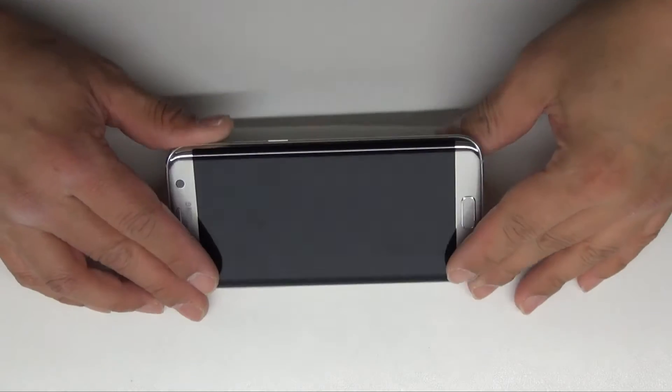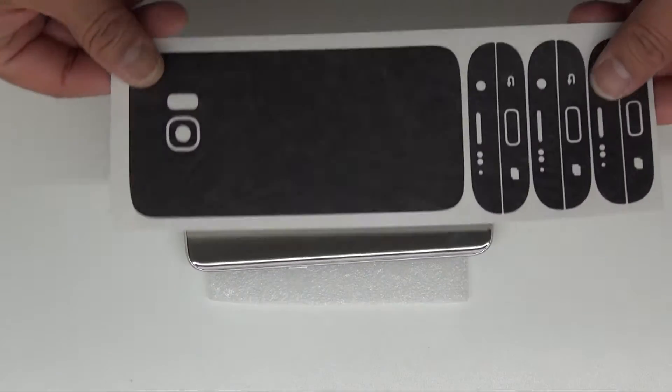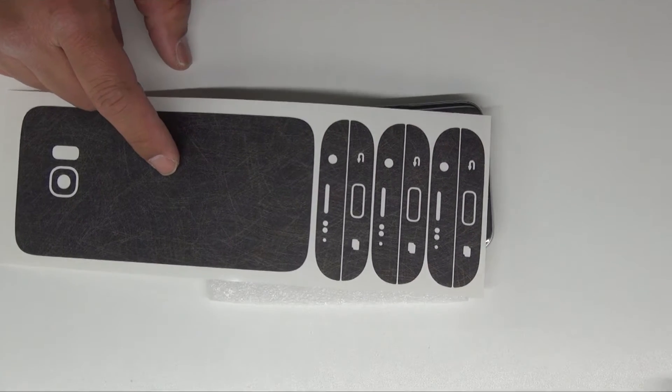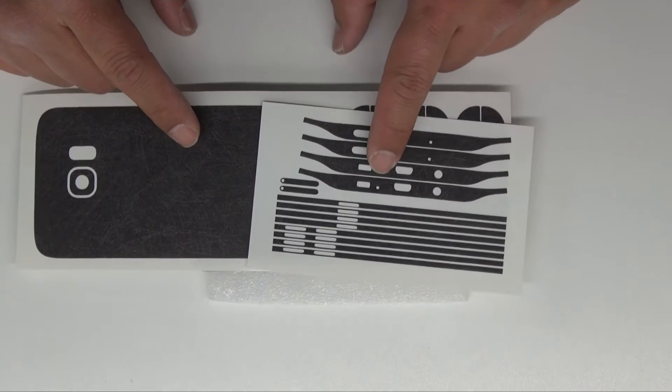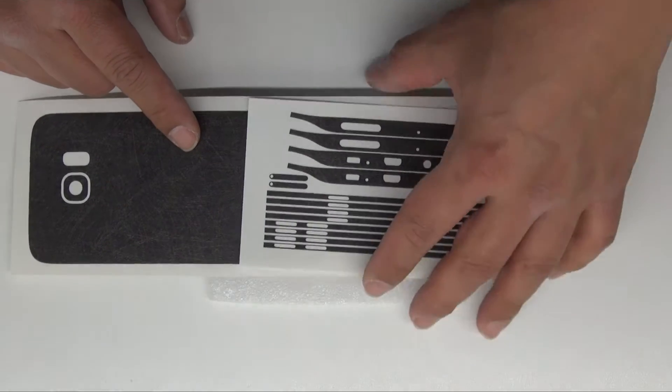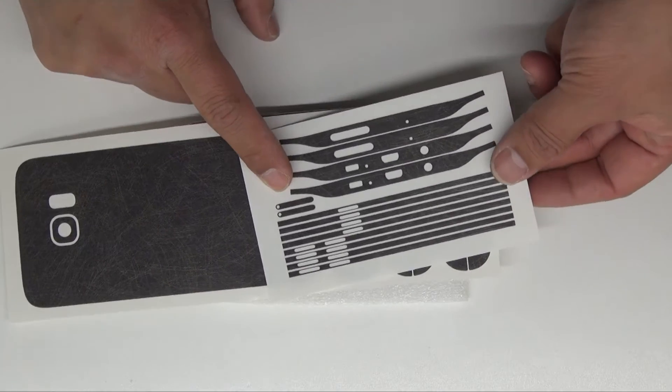This installation video is for the S7 Edge. As you see, this is the back. These are the two-piece fronts, and these are the sides. You get two lowers and two top, and you get four of the left and right, along with the tray covers.